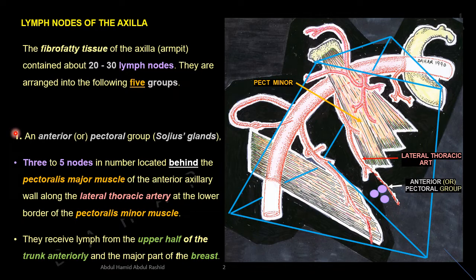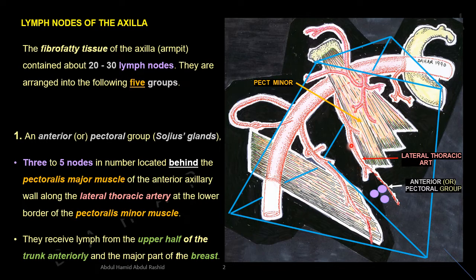Number one: the anterior or pectoral group. There are about three to five nodes located behind the pectoralis major muscle on the anterior axillary wall, along the lateral thoracic artery at the lower border of the pectoralis minor muscle. These anterior pectoral nodes receive lymph from the upper half of the trunk anteriorly and the major part of the breast.